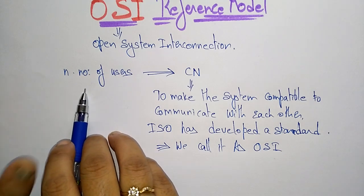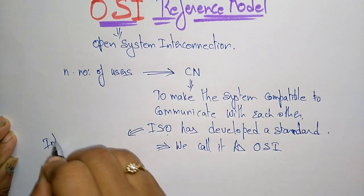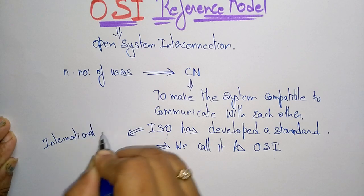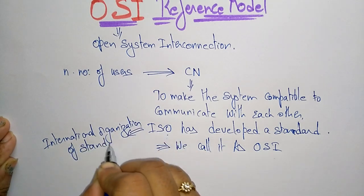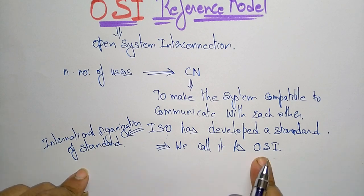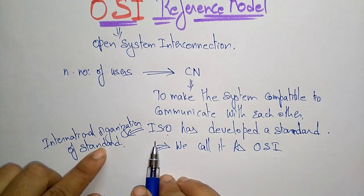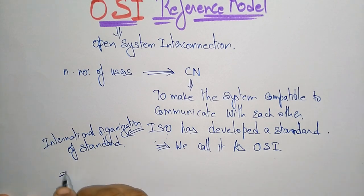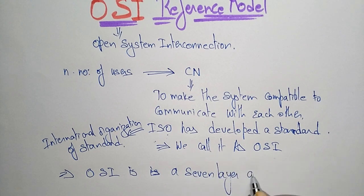That standard we call the OSI reference model. To make systems compatible to communicate with each other, ISO — which stands for the International Organization of Standards — has developed the OSI reference model.